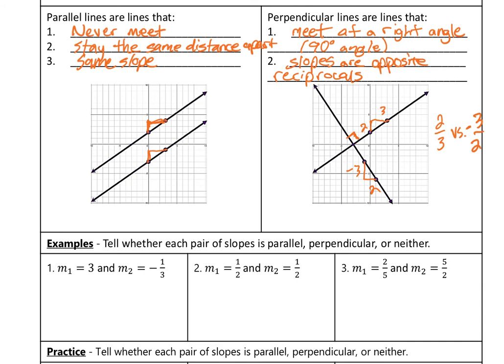And that might mean that I have to make one of them a fraction. So I can think, okay, what's the flip of 3? The flip of 3 over 1 is 1 third. These are different signs. So these are opposite reciprocals, and that means this one is perpendicular.